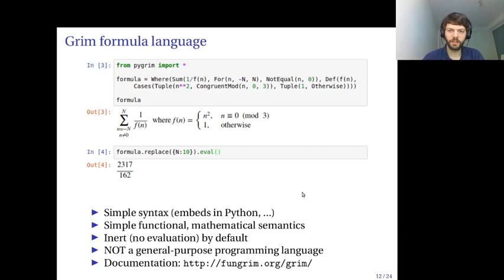For the database, I decided to develop a simple symbolic expression language from scratch. This shows that you can use it in Jupyter. This is just importing the Pygrim Python library. What you see here on the right-hand side is an example of a symbolic expression in what I've named the Grim formula language. In this case, it's this source code, and it produces this formula rendered to LaTeX.